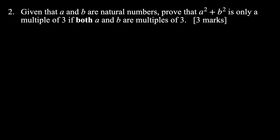Question 2. That first question was an actual exam question; these next two I made up, so they might not be quite as good but I hope they're still useful. This question says: given that a and b are natural numbers, prove that a² + b² is only a multiple of three if both a and b are multiples of three. Think about what we just proved — the square of any natural number is either a multiple of three or one more than that. So what are our options for a² + b²? Well, a² could be a multiple of three or one more than that, and the same for b².